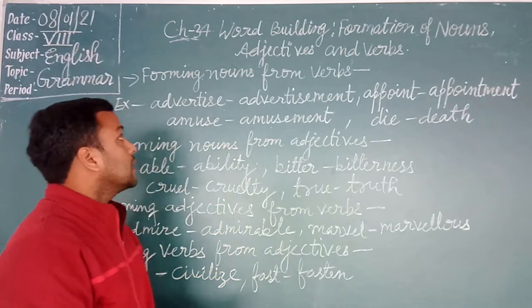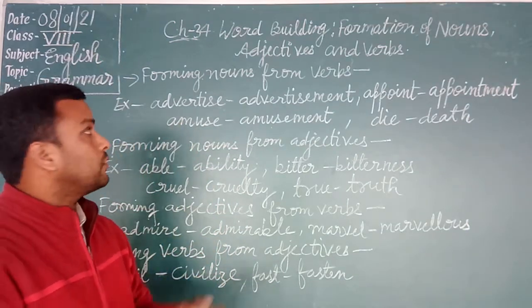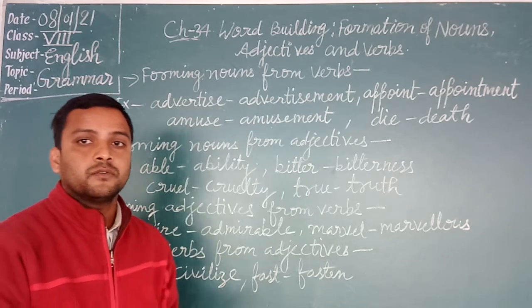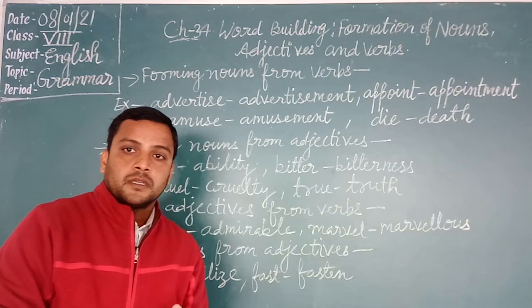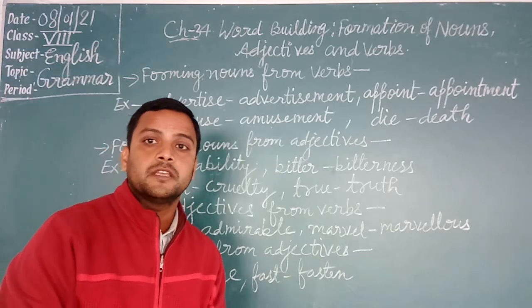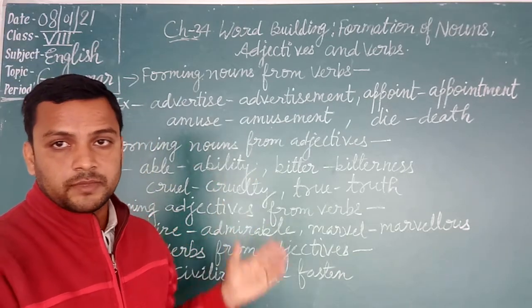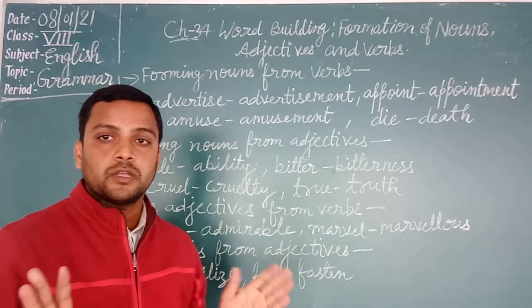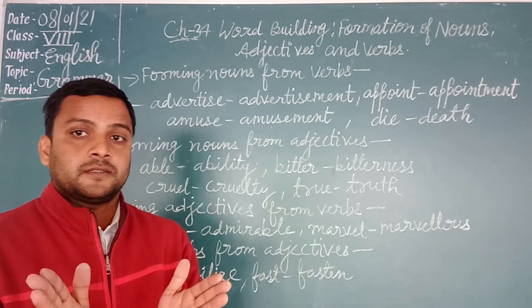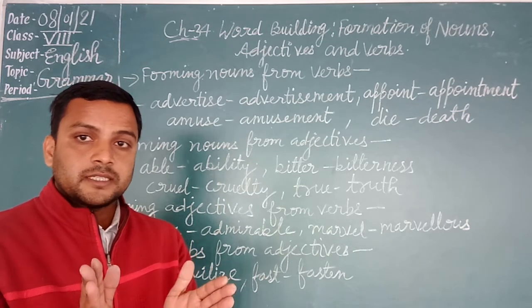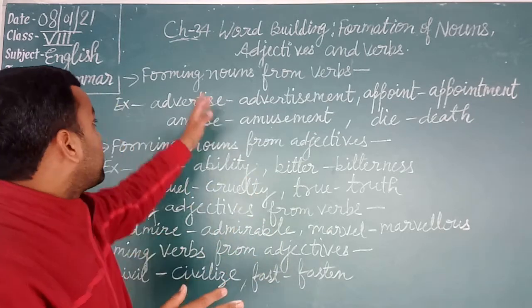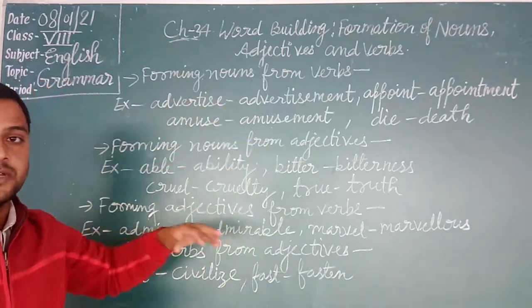Students, now see chapter number 34: word formation — formation of nouns, adjectives, and verbs. A list of formation of nouns, adjectives, and verbs has been given in your book. I have written some examples. Students, there is no particular rule — you have to learn and revise all these nouns formed from verbs and verbs formed from nouns.